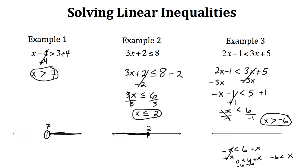No matter which method you choose, you'll always get x is greater than negative 6. The key rule: if you multiply or divide by a negative number, you must switch the direction of the inequality sign. On the number line, we place an open circle at negative 6 and shade in the positive direction.